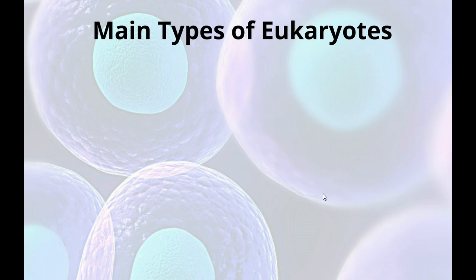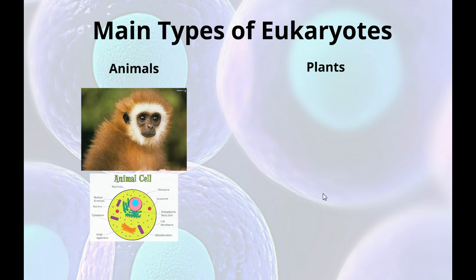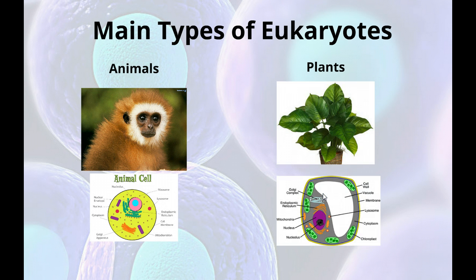Our two main types of eukaryotes, remember these are the ones with the nucleus, animals and plants. Fungi are also on there as well, but we're not going to be testing on them right now. All animals are made out of cells. All plants are made out of cells, but those cells are somewhat different. They both still have a nucleus. There's the animal cell nucleus, there's the plant cell nucleus. But they have additional little things that differentiate them. Animal cells have some things that plant cells don't. Plant cells have some things that animal cells don't. We'll be learning about those later on.